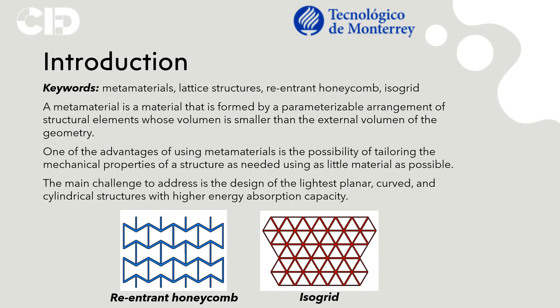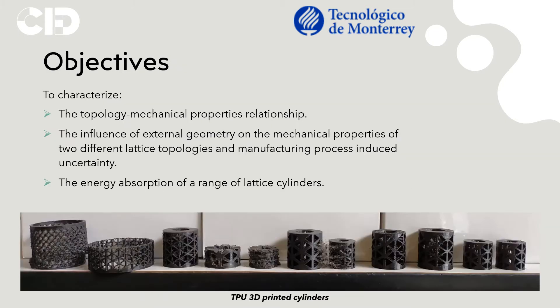This work proposes the analysis of the deformation and filler mechanisms of metamaterials in planar, curved and cylindrical structures with two different topologies, re-entrant honeycomb and iso-grid, as shown on the images below. The main challenge to address is the design of the lightest structures with higher energy absorption capacity. The main objectives involve the characterization of the topology mechanical properties and external geometry influence, as well as manufacturing process induced uncertainty and energy absorption.